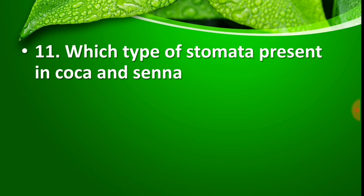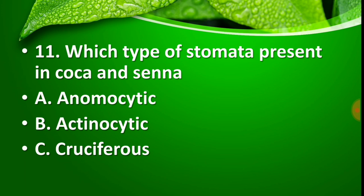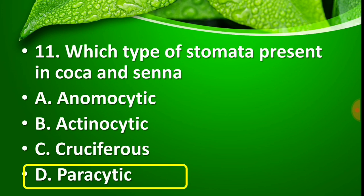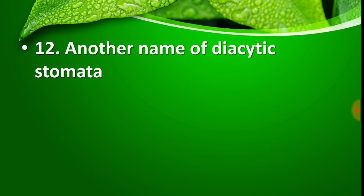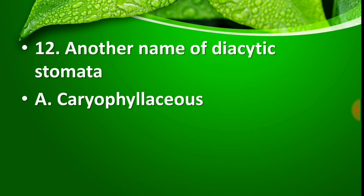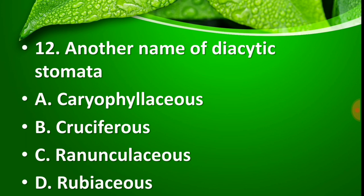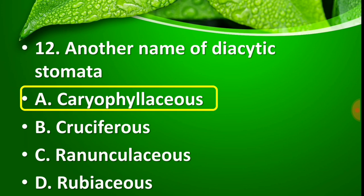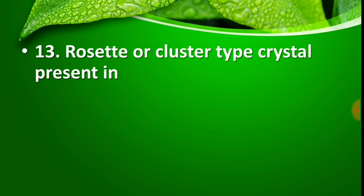Question number 11: Which type of stomata is present in Coca and Senna? Options — Option A: anomocytic, Option B: actinocytic, Option C: cruciferous, Option D: paracytic. The right answer is Option D — paracytic stomata are present in Coca and Senna. Question number 12: Another name of diacytic stomata is — Option A: Caryophyllus stomata, Option B: cruciferous stomata, Option C: Ranunculus stomata, Option D: Rubus stomata. The right answer is Option A — diacytic stomata is also called Caryophyllus stomata.